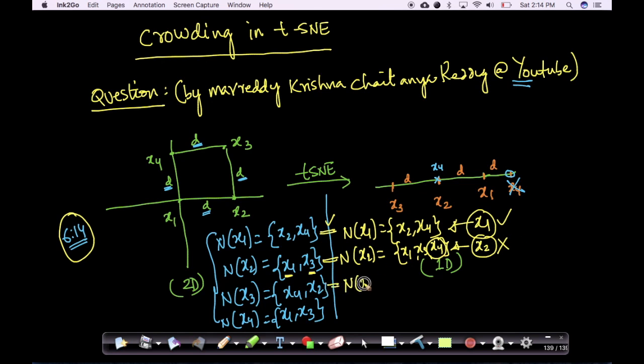What about neighborhood of x3? What happens to my x3? My x3 has x2 and x4. My x3 has x2 and x4. So, my x3's neighborhood is perfectly preserved.